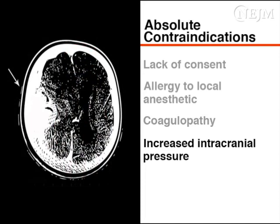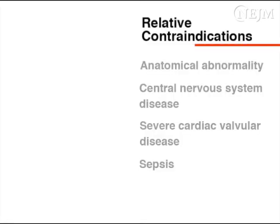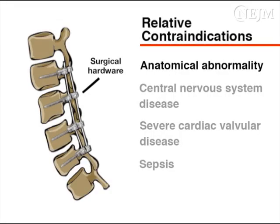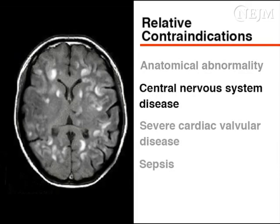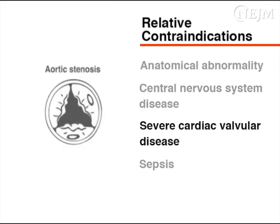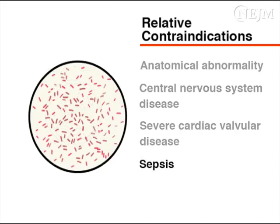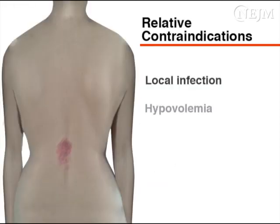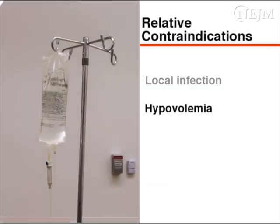Increased intracranial pressure could result in brain stem herniation if a dural puncture occurs during the procedure. Relative contraindications include an anatomical abnormality such as spina bifida or an abnormality caused by spinal surgery, central nervous system disease such as multiple sclerosis, severe cardiac valvular disease such as aortic stenosis, sepsis, local infection at the site of catheter placement, and severe untreated hypovolemia.